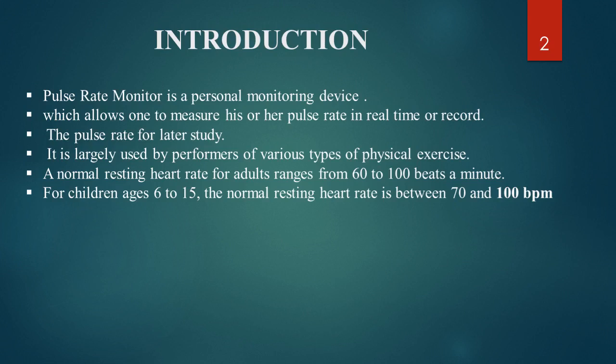The first point is introduction. The pulse rate monitor is a personal monitoring device used for later study. It allows the user to measure his or her pulse rate in real time. Children aged 6 to 15 have a normal pulse rate of 60 to 100 beats per minute. It is largely used to perform various types of physical exercise.